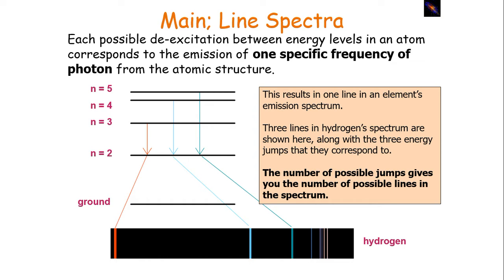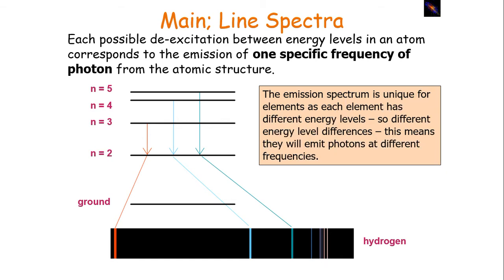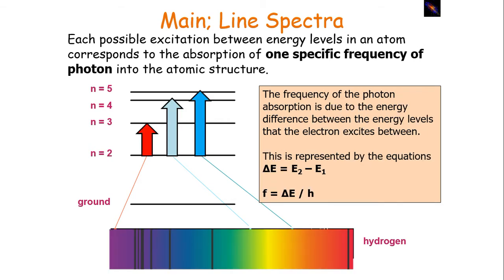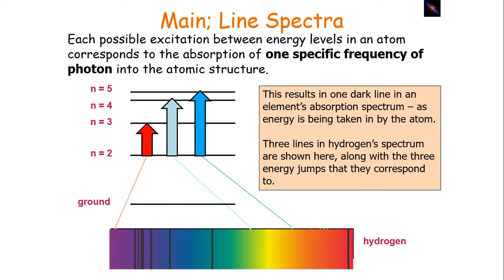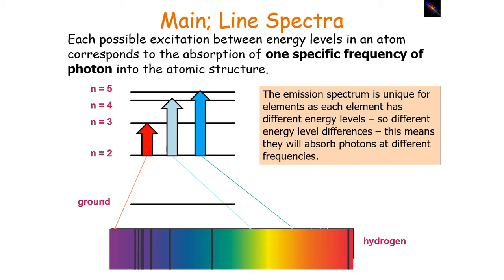Three lines in the hydrogen spectrum are shown, along with the three energy jumps they correspond to — the number of possible jumps gives the number of possible lines in the spectrum. The emission spectrum is unique for each element, as each element has different energy levels and therefore different energy level differences, so they emit and absorb photons at different frequencies. The absorption spectrum is determined by the photons for which excitation can occur in the atom.